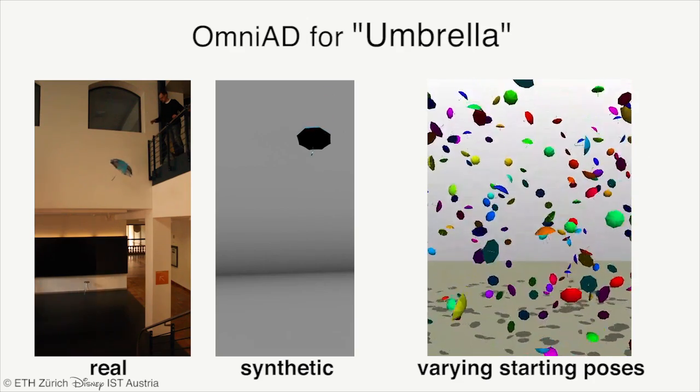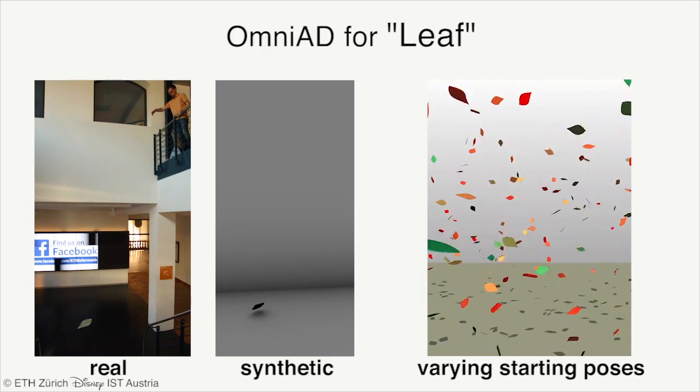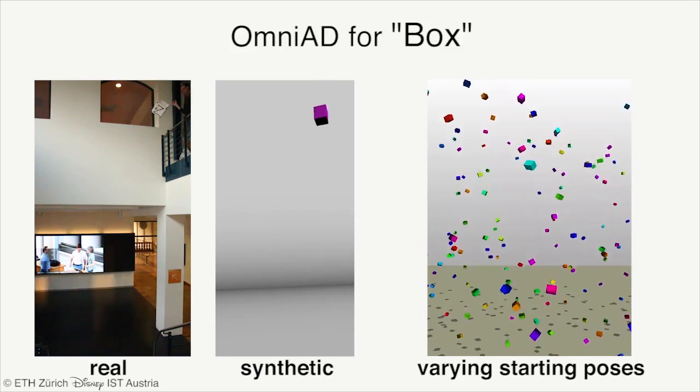Here we demonstrate that the estimated omnidirectional aerodynamic model reproduces the characteristic motion of the object as it interacts with air.